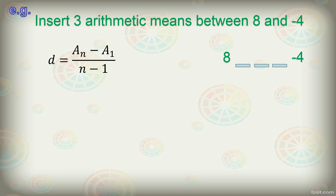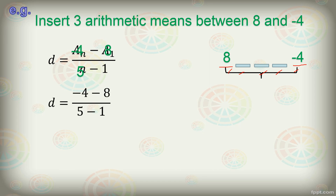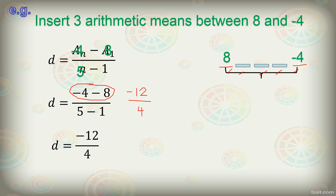Our a sub n, the last term, is negative 4. Minus a sub 1, the first term, which is 8. Divided by n, the number of terms. Looking at our sequence, we have 1, 2, 3, 4, 5 — so we have 5 terms in all, meaning n is 5. Rewriting our equation: D equals negative 4 minus 8 divided by 5 minus 1. Negative 4 minus 8 gives us negative 12, and 5 minus 1 gives us 4. Therefore, D equals negative 12 divided by 4, so our common difference is negative 3.